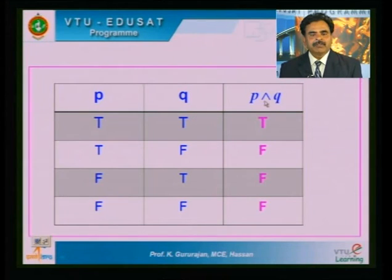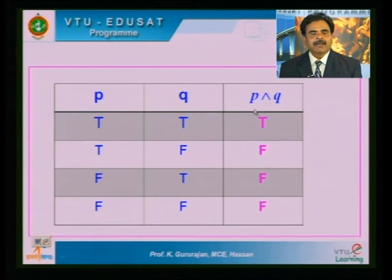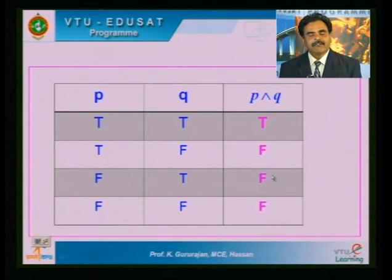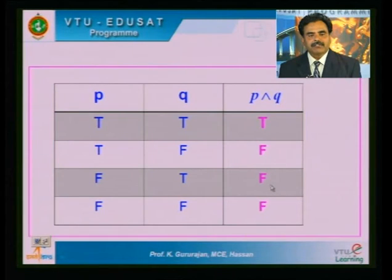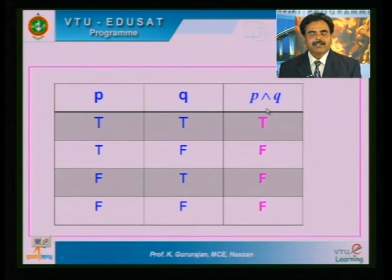P conjunction Q, also called logical AND, is a compound proposition whose truth value is true only when both P and Q are true; otherwise it is always false. Conjunction and disjunction operators have contrasting qualities, so they are called dual operators. The NAND operator means NOT-AND: P NAND Q is the negation of P AND Q — first apply the AND operator, then apply negation.